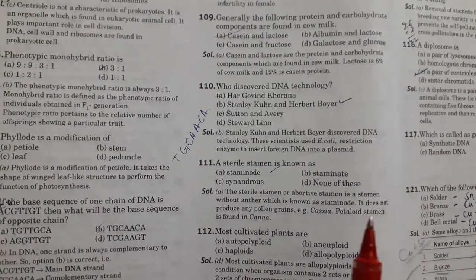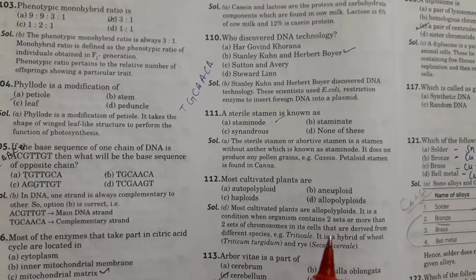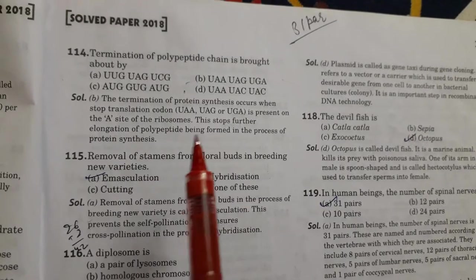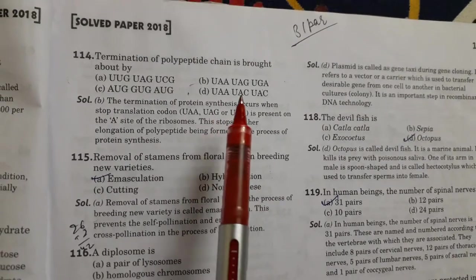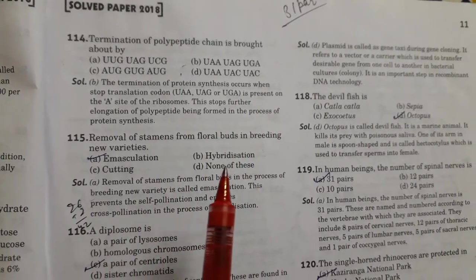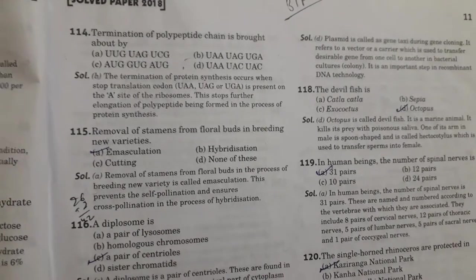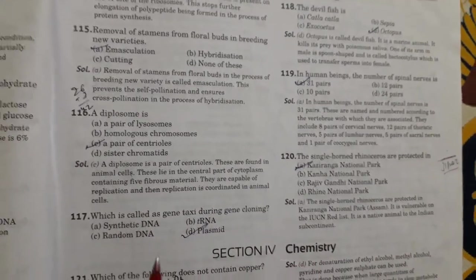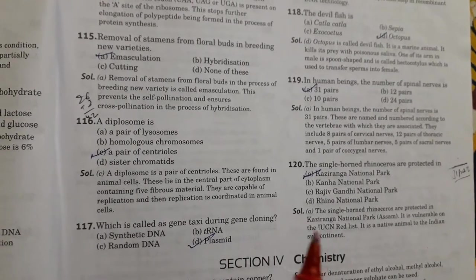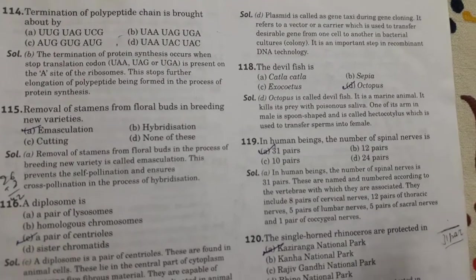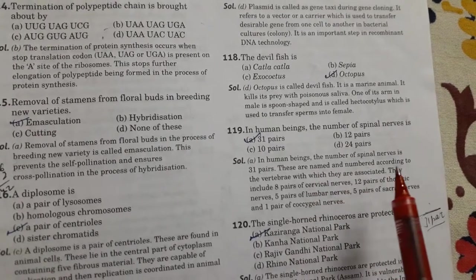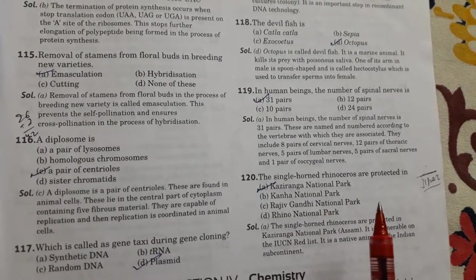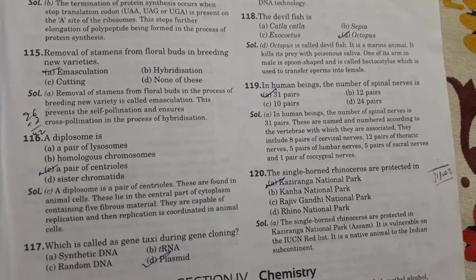Next is a sterile stamen is known as staminode. Next question is most cultivated plants are allopolyploids. Next is herbivore is a part of the cerebellum. Next question is termination of polypeptide chain is brought about by UAA, UAG, UGA. Then there is removal of stamen from floral bud in breeding new varieties. So this is called emasculation. Option A is right. Then a diplosome is a pair of centrioles. Then which is called as gene taxi during gene cloning. So plasmid is called gene taxi. Next question is the devil fish is octopus. Then in human beings the number of spinal nerve is 31 pairs. Next question is the last question biology. So the single horned rhinoceros are protected in Kaziranga National Park, Assam.